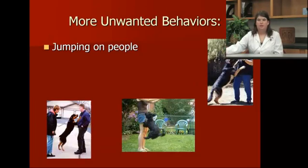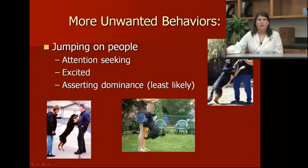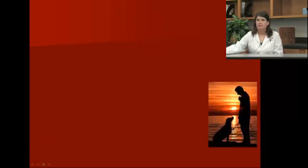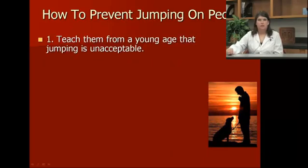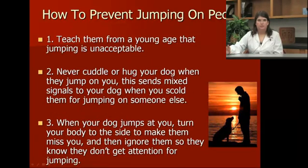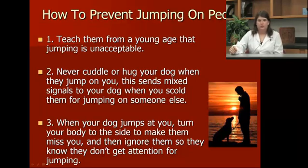Jumping on people is another big unwanted behavior in dogs. They do it because they're either attention seeking, really excited to see you, or asserting their dominance. To prevent this: teach them from a young age that jumping is not acceptable — even when they're a puppy, don't let them jump up on you because you think it's cute. Never cuddle or hug your dog when they jump up on you, as that reinforces the unwanted behavior. When your dog runs at you to jump, turn your body sideways so he'll jump right past you, and pretty soon he'll get the idea that it's not much fun and stop.